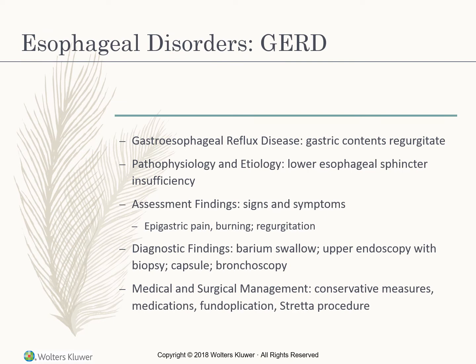Esophageal disorders: GERD, or gastroesophageal reflux, is gastric contents regurgitating. The pathophysiology is that the lower esophageal sphincter is insufficient — it's not closing. Signs and symptoms include epigastric pain, burning, and regurgitation. Diagnostic findings include a barium swallow, upper endoscopy with biopsy, and capsule measurement from the lower esophageal sphincter measuring pH and frequency of reflux. The barium swallow shows strictures, banding, and inflammation. A bronchoscopy is also done to assess the respiratory airway for aspiration.